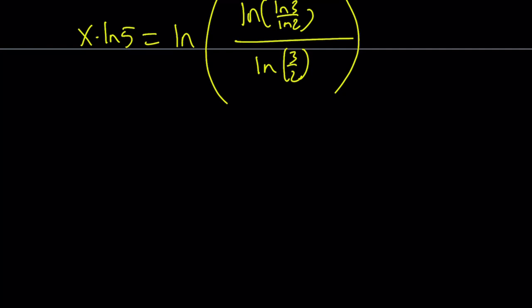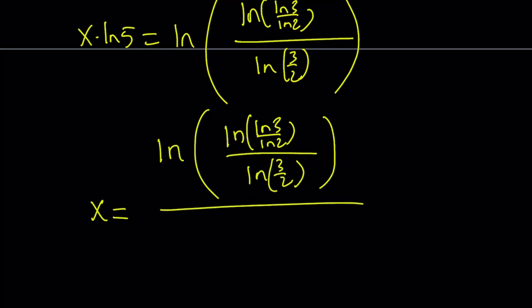So let's do it. x, if you divide both sides by ln 5, you're going to get the following: ln of ln ln 3 over ln 2 divided by ln 3 halves, and that is divided by ln 5. And that should be the answer.